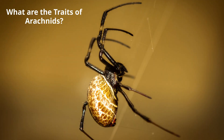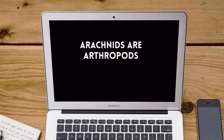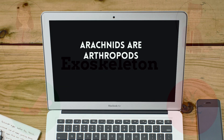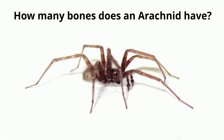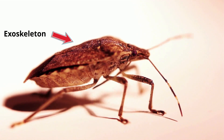First, Arachnids are Arthropods, and all Arthropods have several traits in common. The first trait is the exoskeleton. Remember the question from the beginning? The answer to how many bones an arachnid has is none. Arthropods do not protect their organs with a skeleton made of bones. Instead, they have a hard outer covering called an exoskeleton.